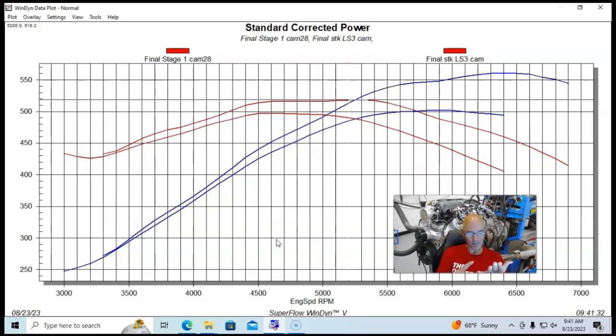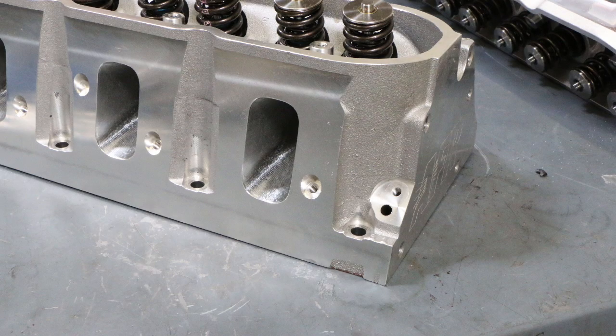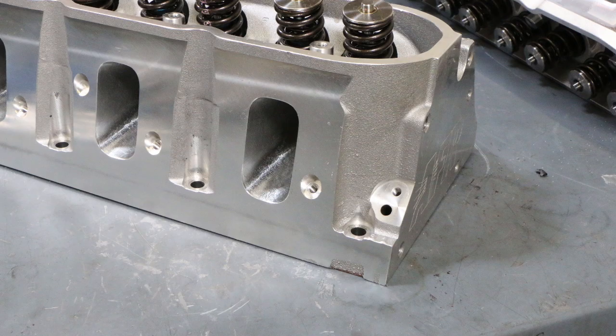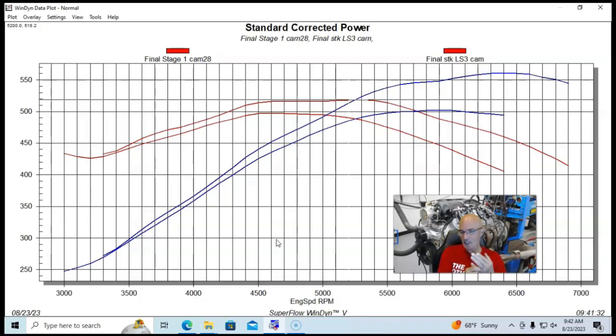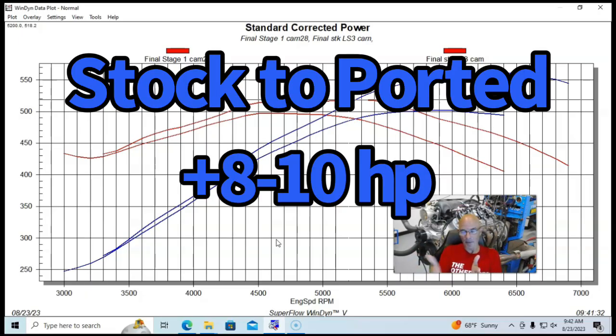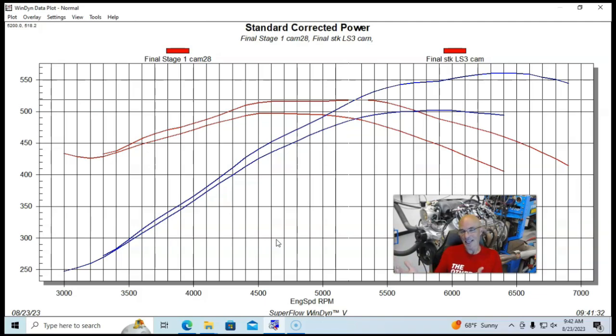And here's the thing. This is not an Airflow Research head. An Airflow Research head probably would be a little bit better than the CNC ported factory GM head. But with a stock cam, how much better would it really be? Because going from a stock head to a completely CNC ported head with a stock cam is worth about eight or ten horsepower. That's it. Not because the CNC heads don't work - they do. They can support a lot of power.